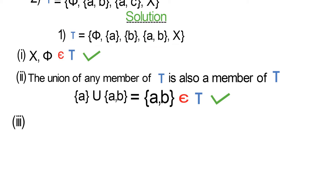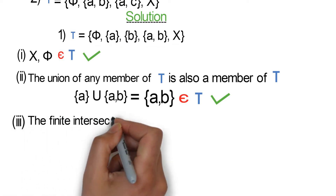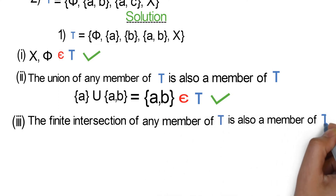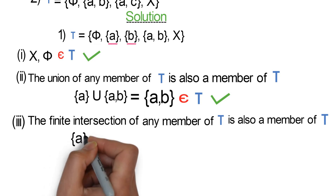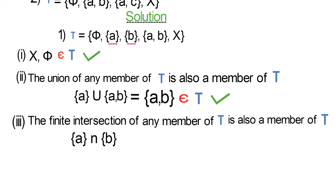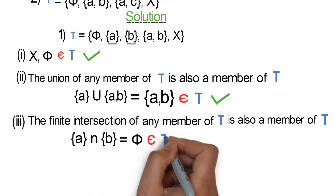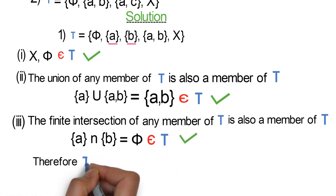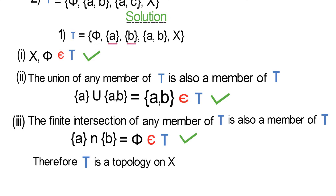Condition 3 states that the finite intersection of any member of tau is also a member of tau. Let's take two elements of tau and find the intersection. The intersection of the singleton set {a} and the singleton set {b} gives the empty set, which is also a member of tau. So condition 3 holds. Therefore, tau is a topology on X.